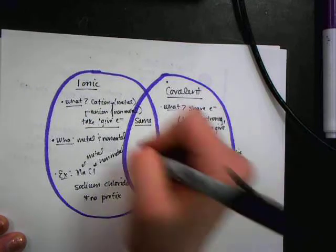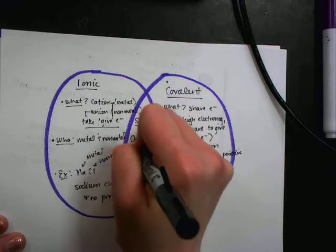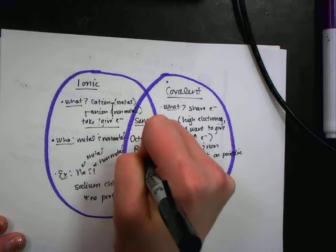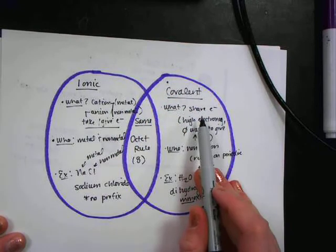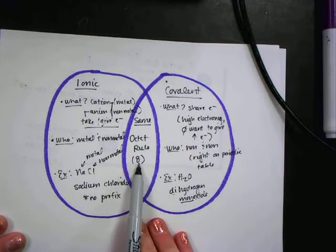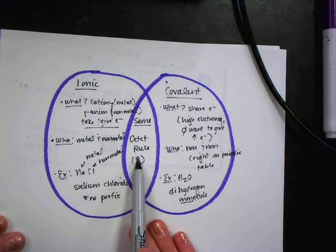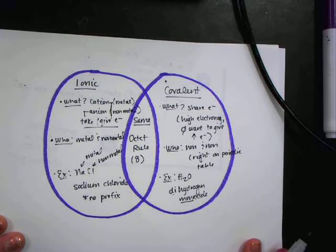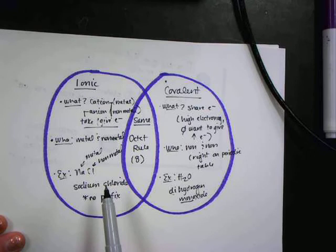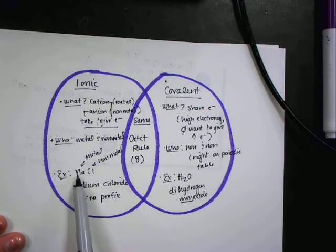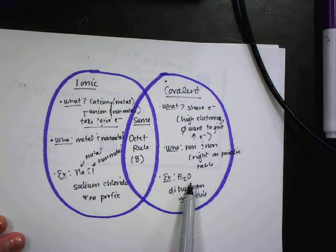The same is the octet rule. So both of them bind, or both of them form compounds in order to fill up their subshell. And we call that the octet rule. Usually it means eight electrons in the valent shell. So both of these are driven by the idea that the involved molecules could have a full valent shell.